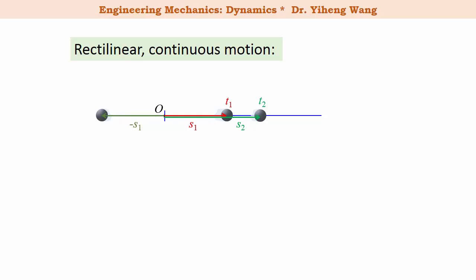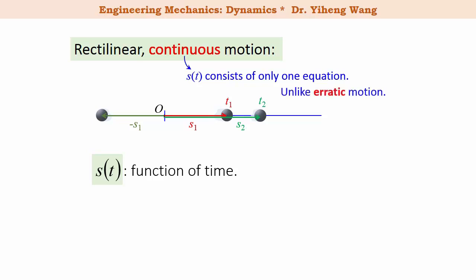Once again, the position s is a function of time. Here, continuous motion means that the position function s(t) consists of only one equation, versus later on when we discuss erratic motion, that is when the position function is a piecewise function that consists of multiple equations.